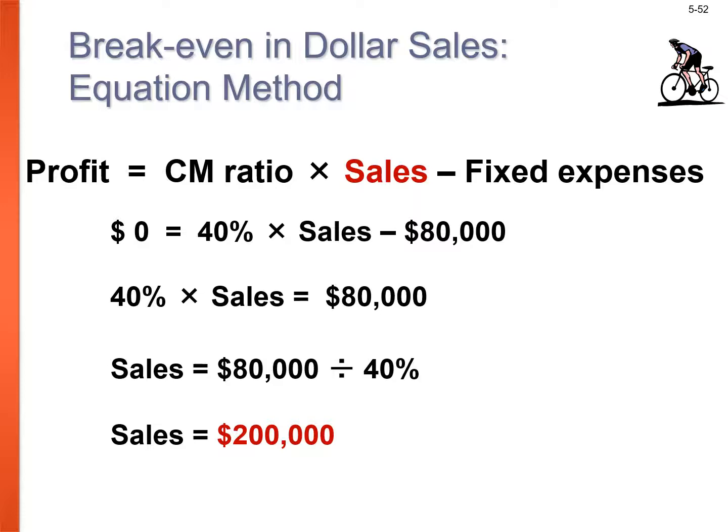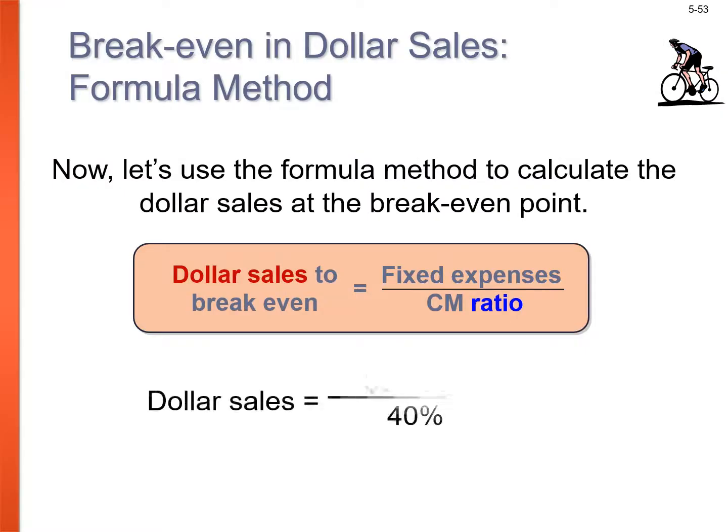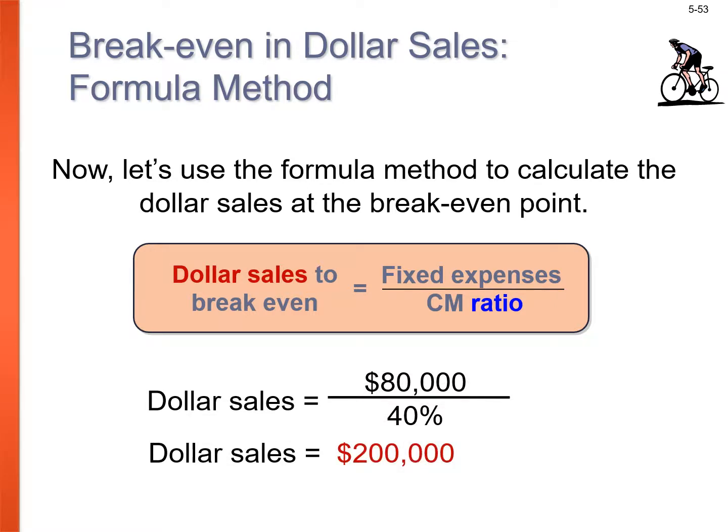There's an easier way — the formula method for break-even in dollars: fixed expenses ÷ CM ratio. Take $80,000 ÷ 40% = $200,000. You can do any of these calculations as long as you know your sale price per unit, variable costs per unit, contribution margin per unit, and ratios.